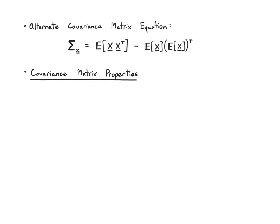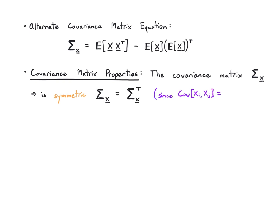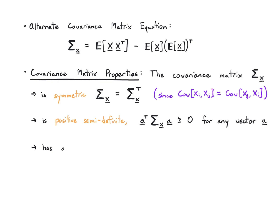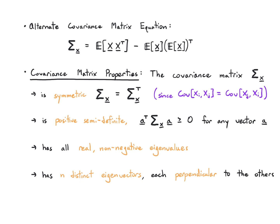An alternate formula for the covariance matrix is E[XX^T] minus E[X]E[X]^T, analogous to the scalar formula. The covariance matrix has several nice properties: it is symmetric, so its transpose equals itself; it is positive semi-definite, meaning multiplying by a vector on both sides gives a result greater than or equal to zero; it has real non-negative eigenvalues; and it has n distinct, mutually perpendicular eigenvectors. These properties will be very useful later.